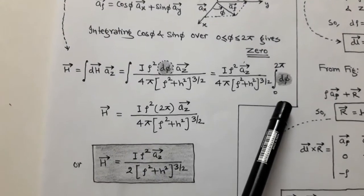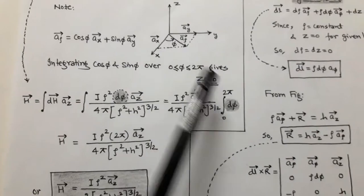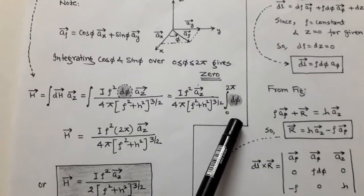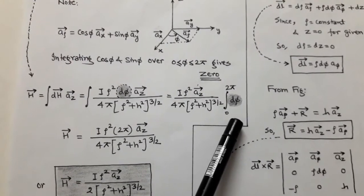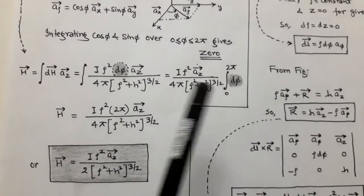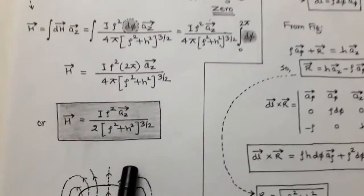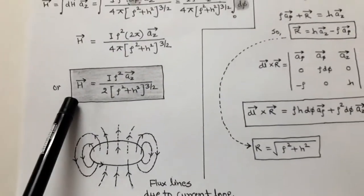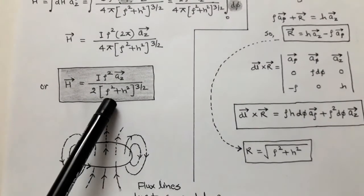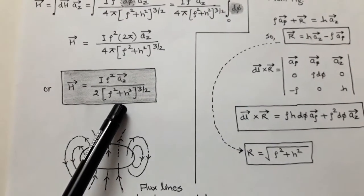φ is the angle made by ρ with respect to the x-axis, and its limit is 0 to 2π in the cylindrical coordinate system. After integration, we get 2π, and 2π/4π simplifies so that π cancels. The resulting magnetic field intensity formula is: H = I ρ² / (2(ρ² + h²)^(3/2)) â_z. In this way, we can determine the magnetic field intensity H due to a circular loop at any point P situated on the z-axis.